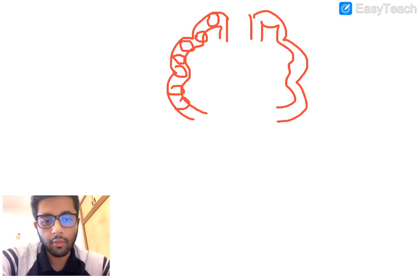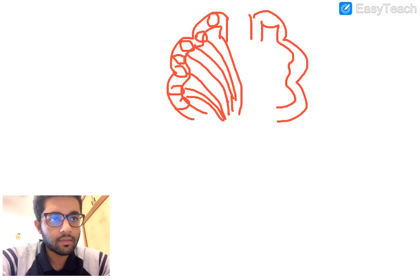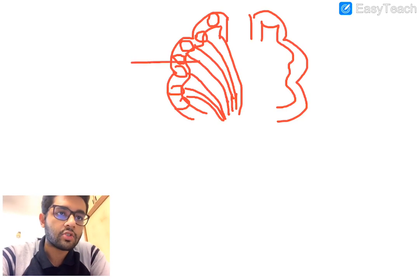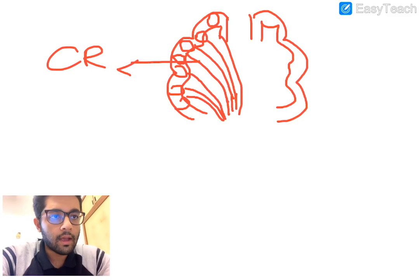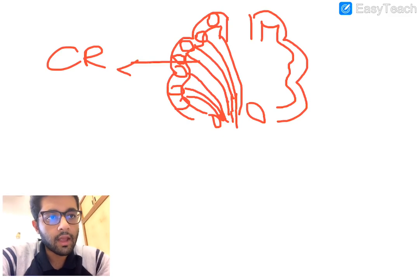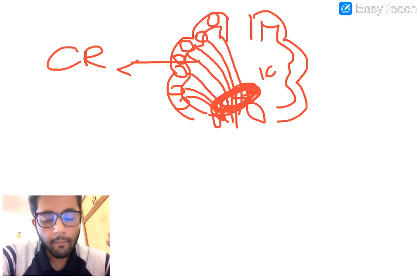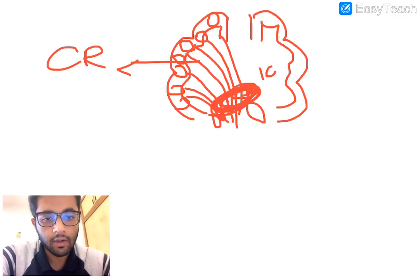The axons of the pyramidal cells come out and form the white matter. These fibers arising from the pyramidal cells make a fan-shaped structure called the corona radiata. All these motor fibers then converge and are very dense at a certain point called the internal capsule.